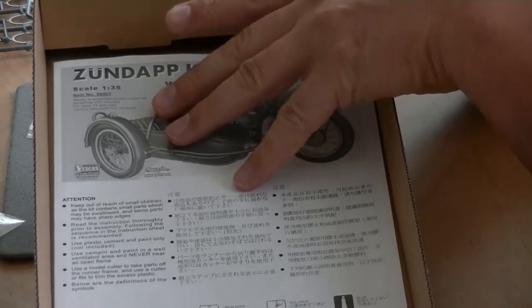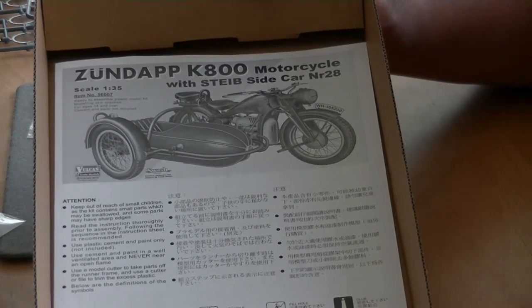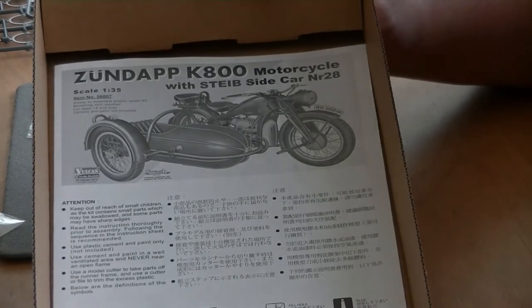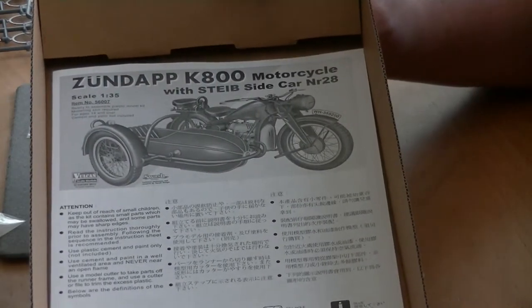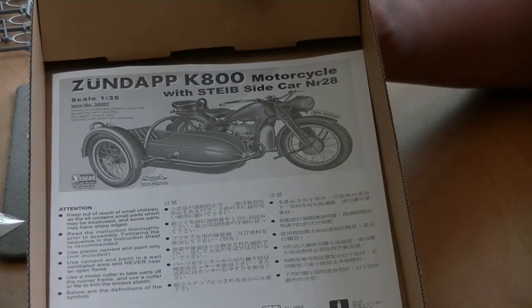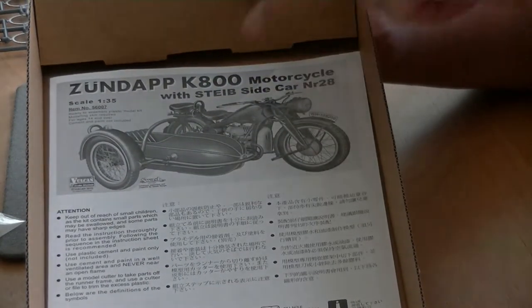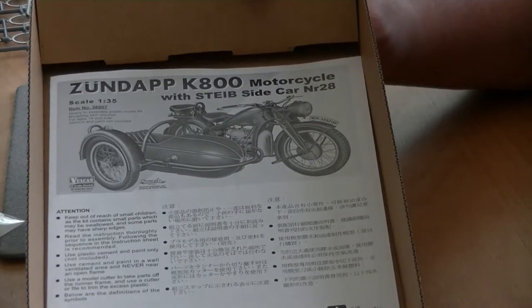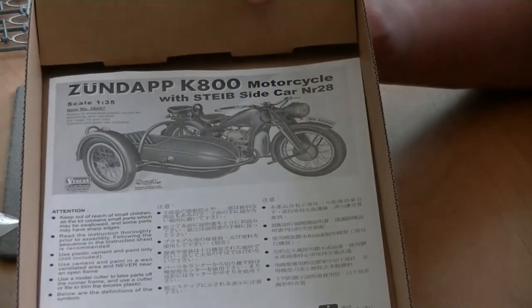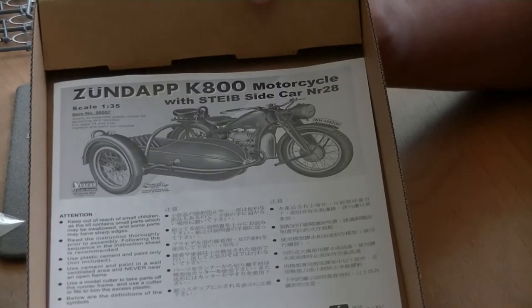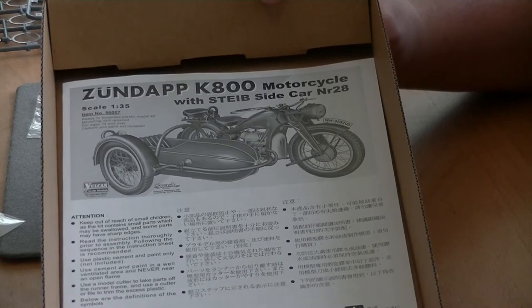You get also this kit also together in one box with the motorcycle and the figures from MiniArt. Other things, you can also have from the brand Vulcan without the boat, the Zundapp 800 and I think the BMW, I think it's the R12.